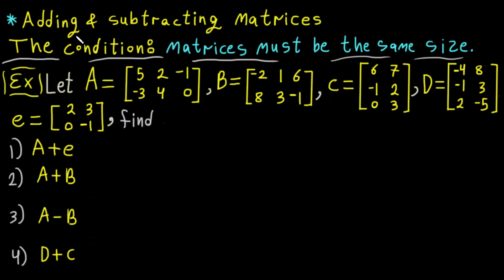In this video we'll do adding and subtracting matrices. Here in this example we have five matrices. To add or subtract two matrices we have to know this condition, because we can't do adding and subtracting matrices unless this condition is satisfied: matrices must be the same size. The size is sometimes called the order or dimension.